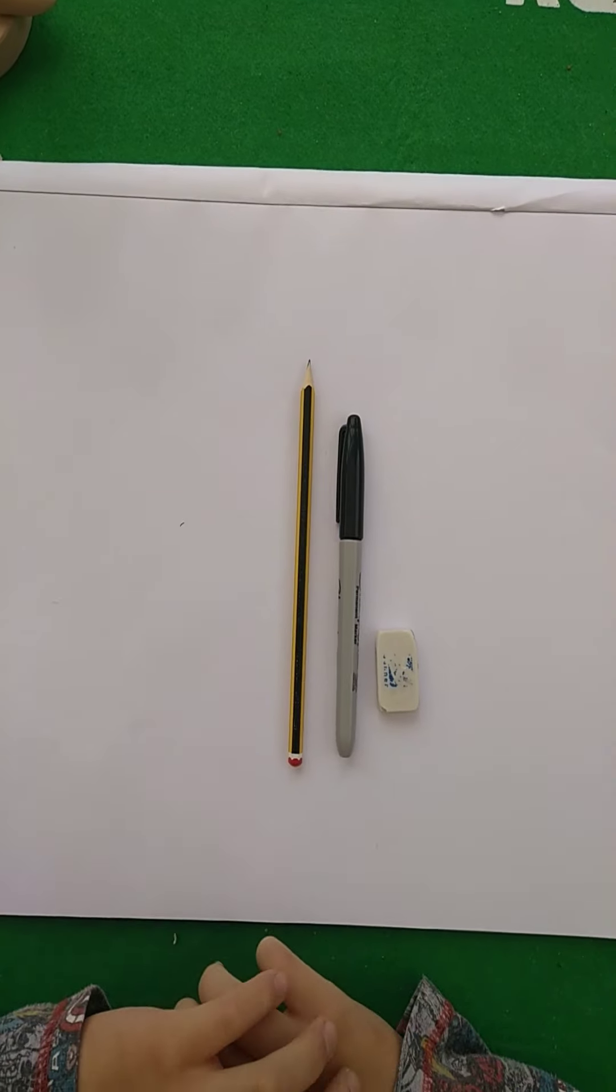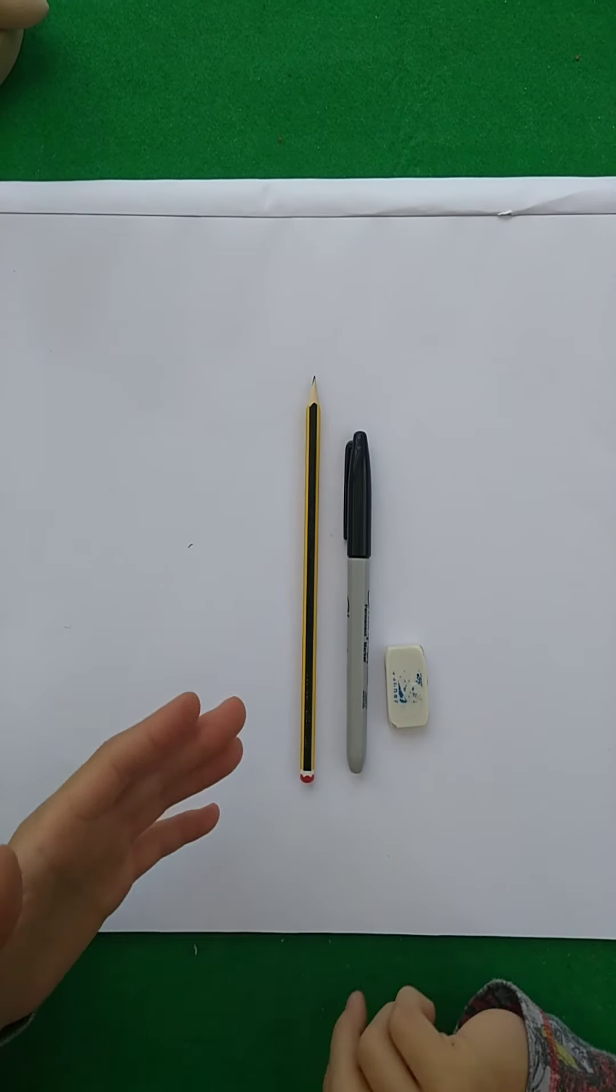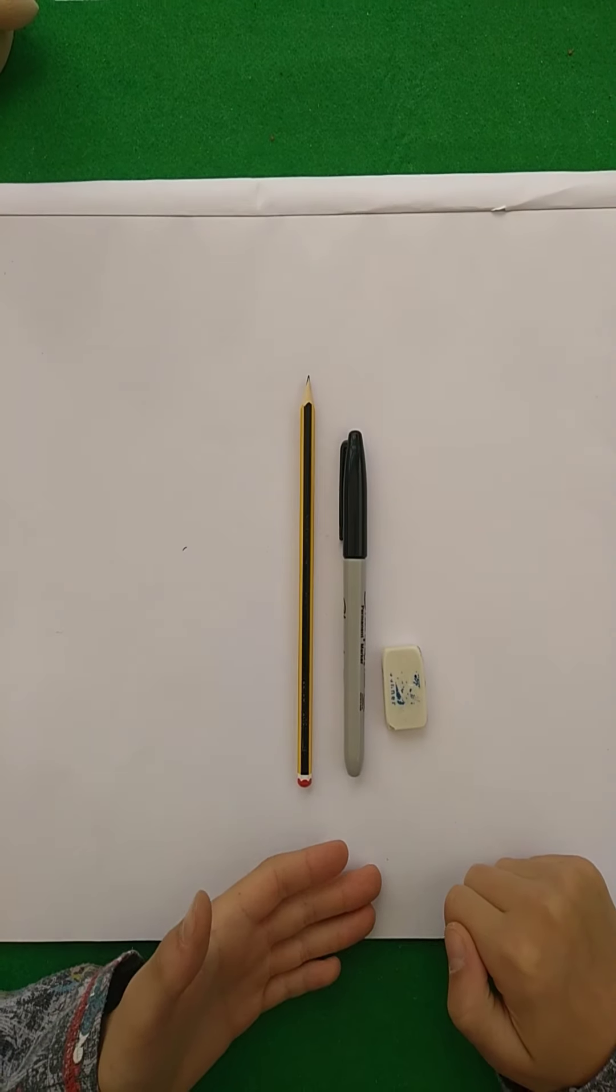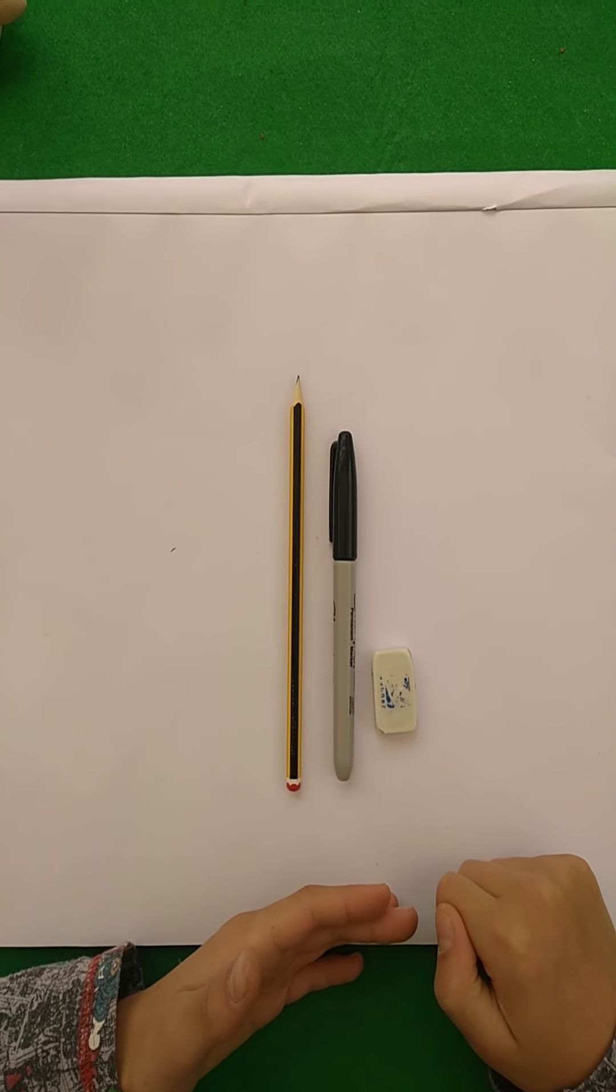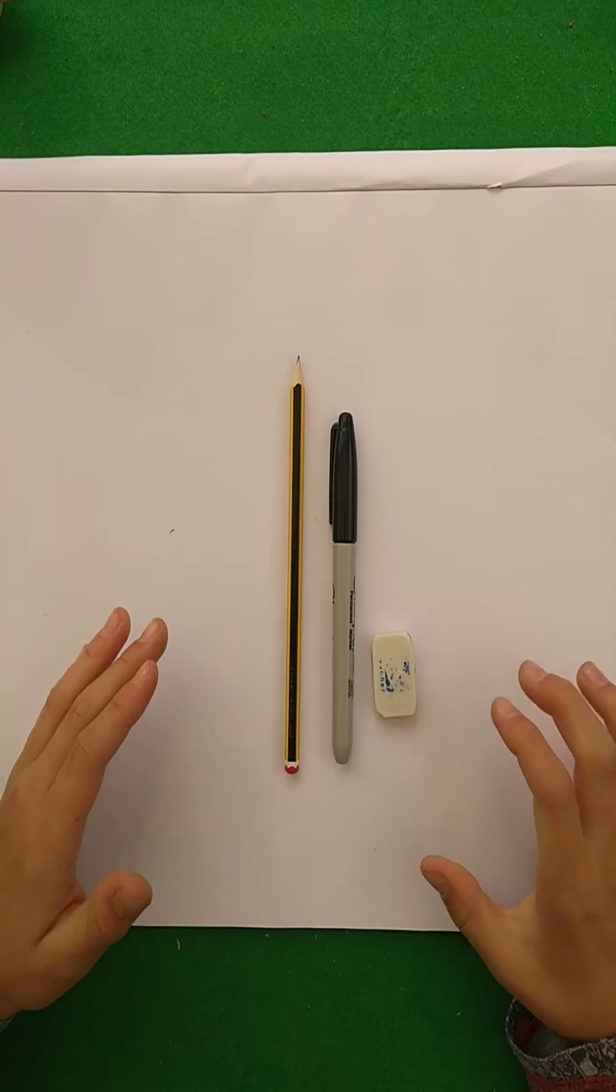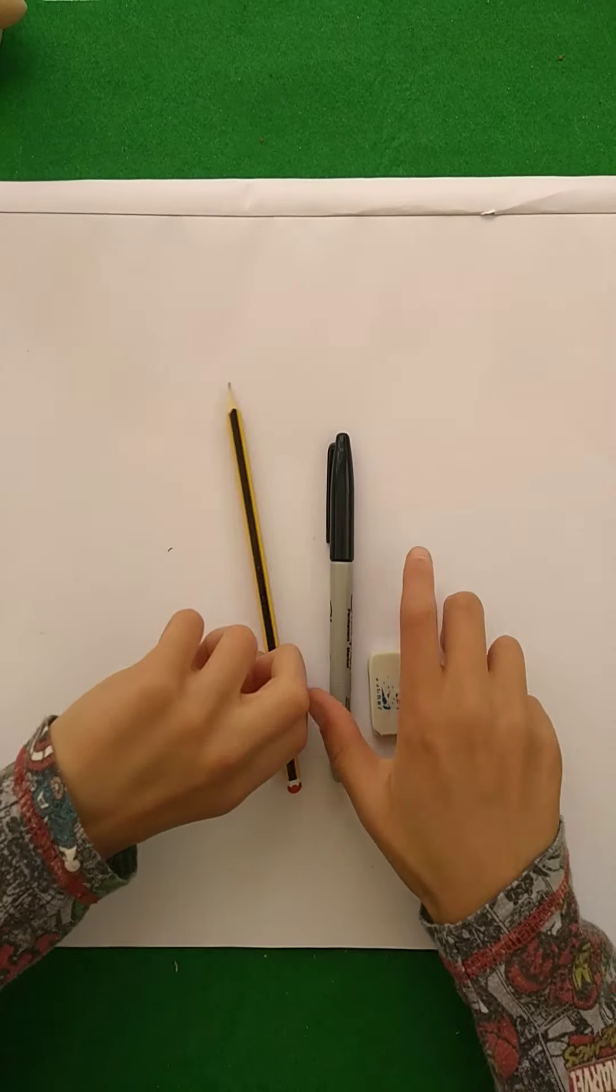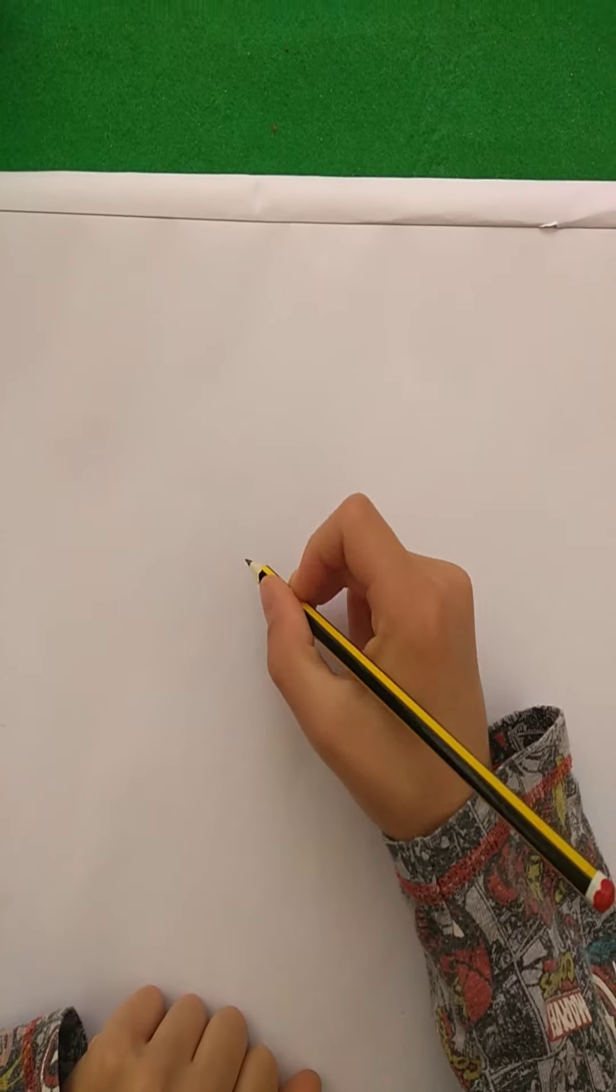So for my first video I will be showing you how to draw a zombie's head. I'll be using a pencil, sharpie, and a rubber. I won't be coloring it in because I'm not too keen, but you can if you want to. To start, draw two circles.